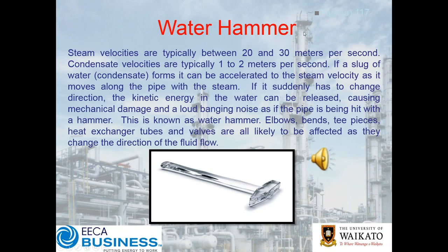So what is water hammer? We're going to talk with specific reference to steam and condensate systems today. In a steam system, steam velocities will typically be between 20 and 30 metres a second, or between about 70 and 100 kilometres an hour. Condensate velocities in comparison — the liquid phase in our two-phase steam condensate mixture — will typically be in the order of one to two metres a second. So greater than an order of magnitude slower.